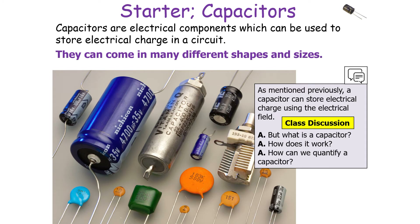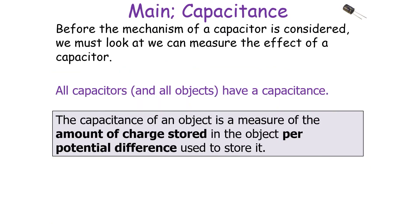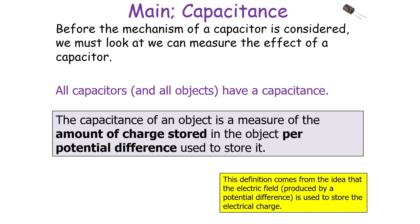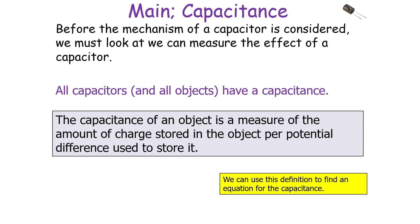A capacitor stores electrical charge using the electrical field. Capacitance is the measure of the amount of charge stored in the object per potential difference used to store it. This definition comes from the idea that an electrical field produced by a potential difference is used to store electrical charge, and we can use this definition to find an equation for capacitance.